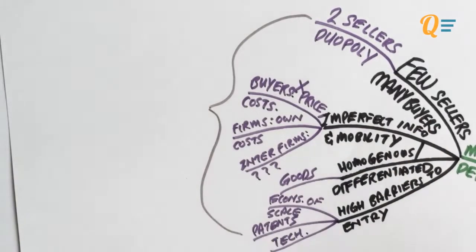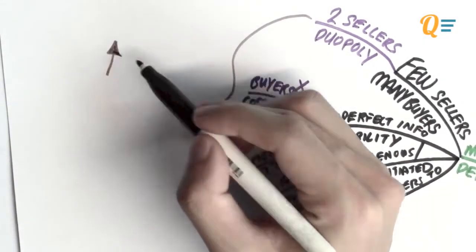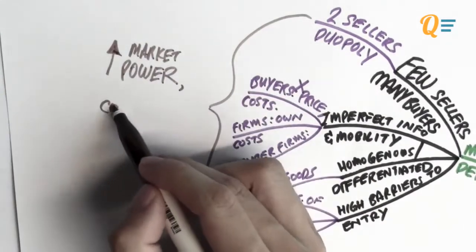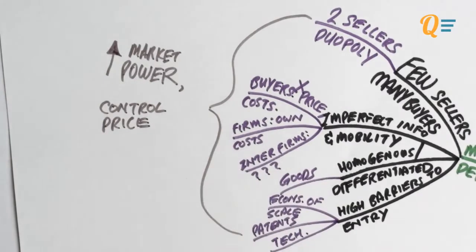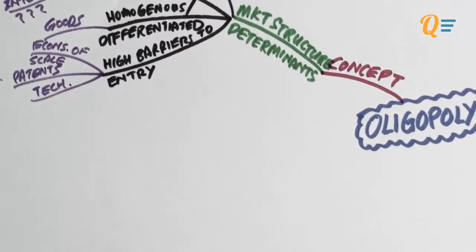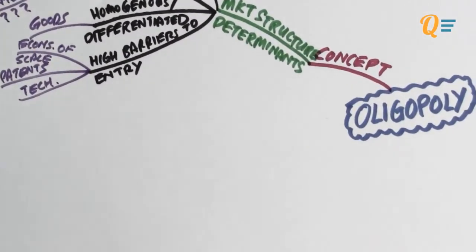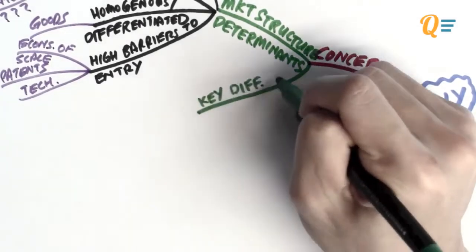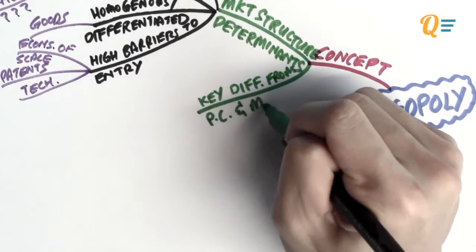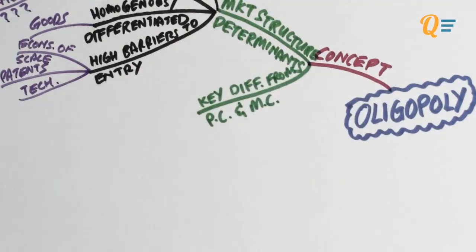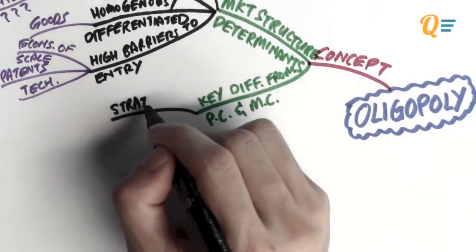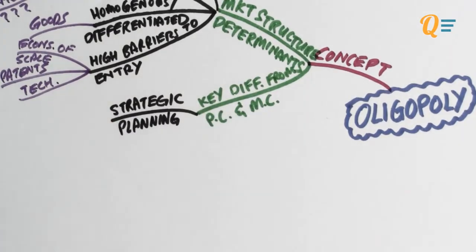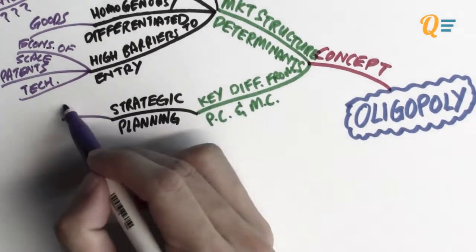Either they've got patents or they're very advanced in the technology that nobody can copy. That's why others can't enter the market. So with these four determinants, we can see that the oligopoly or duopoly actually has very high market power and can control the price to a certain extent. The key differentiating factor that sets oligopoly apart is something called strategic planning.